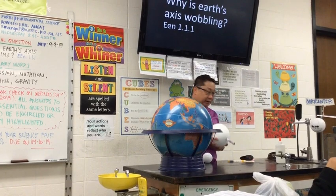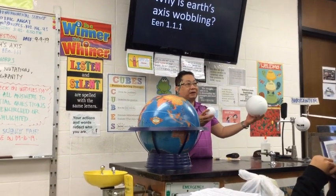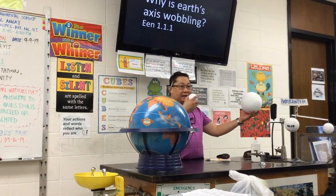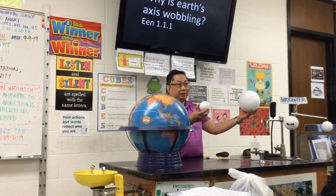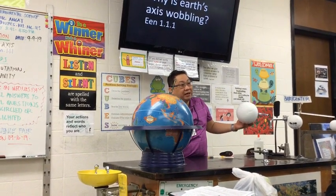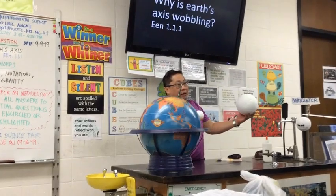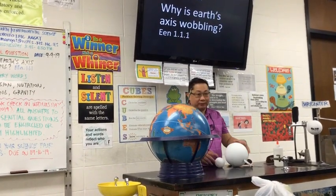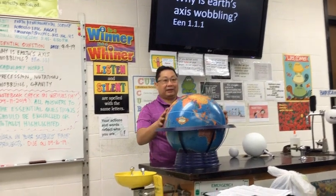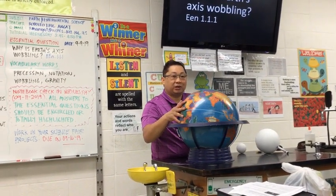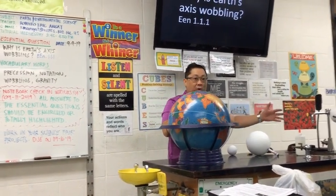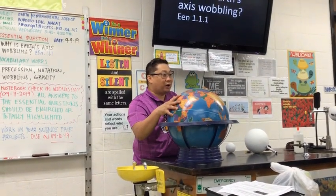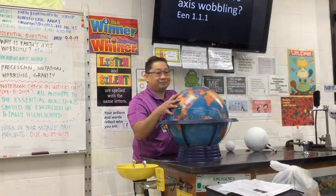Precession is caused by the gravity of the sun and the moon, in combination with the shape of the Earth, which is bulging at the equator. So it doesn't rotate smoothly because of those imbalances, causing the Earth's axis to wobble.